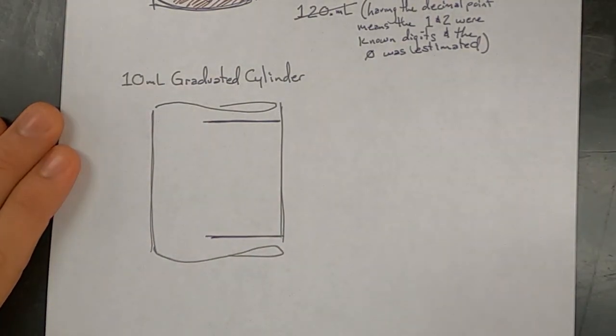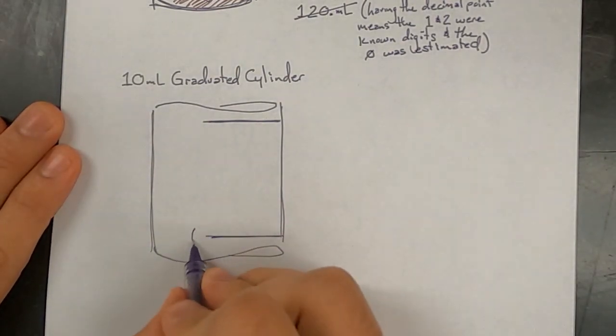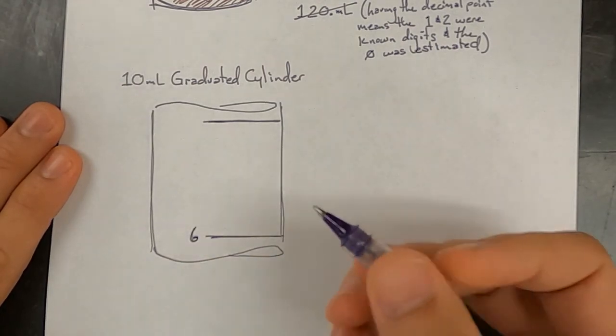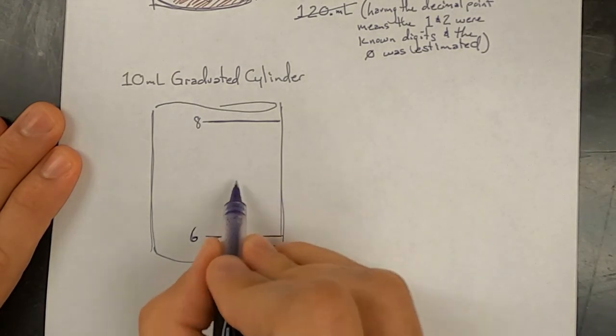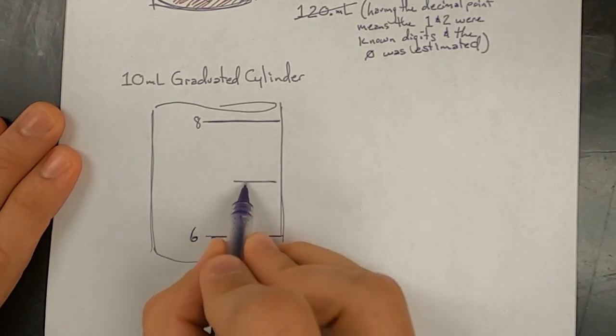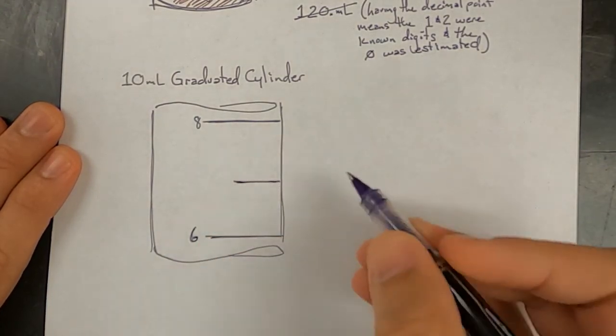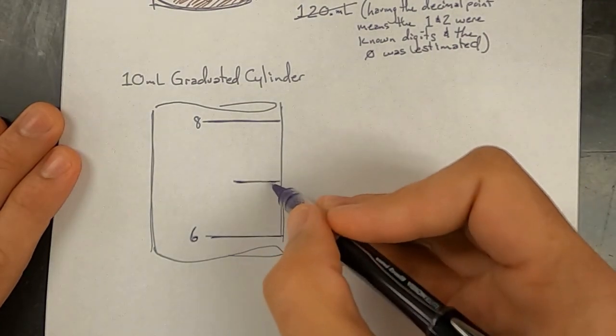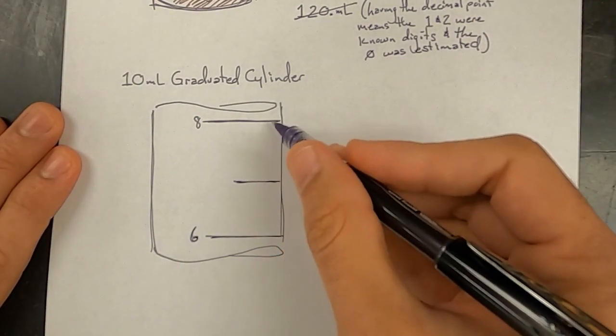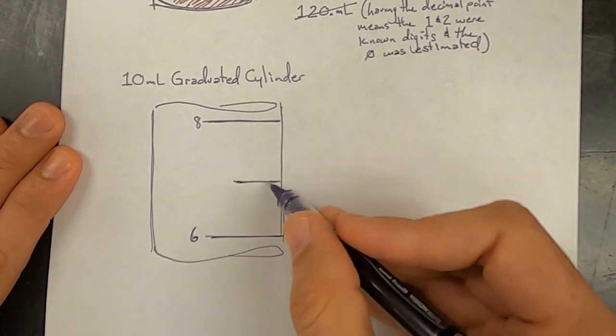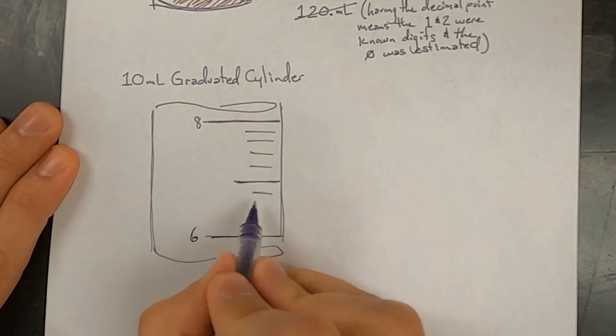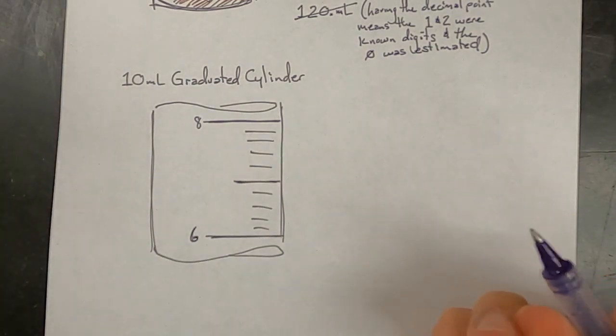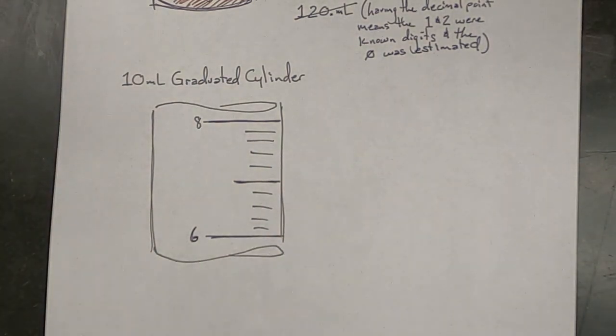Now on this graduated cylinder, there are long marks and one of them is labeled a six. And the next long mark that is labeled is eight. Now there's a medium length mark directly in between those two. And then between this medium length mark and the eight, there are four small marks. Likewise, there are four small marks between here and here. I'm going to draw in a liquid level.